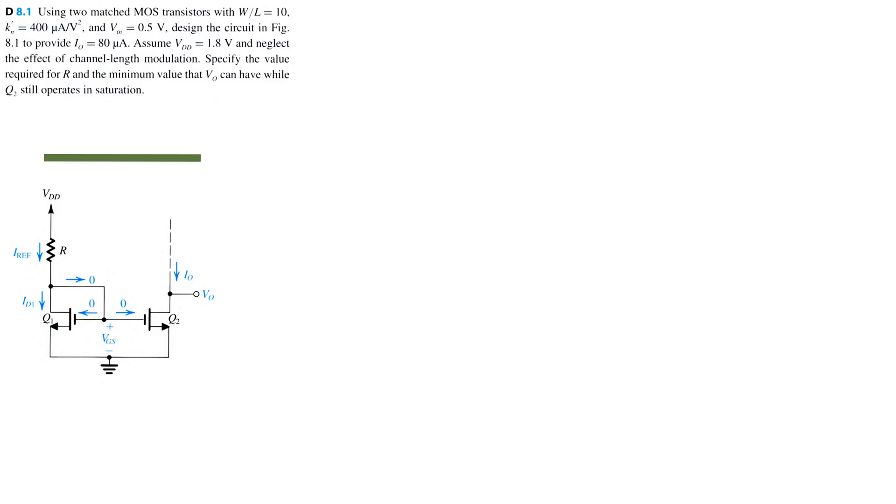We're going to assume that VDD is equal to 1.8 volts. We're going to neglect the effect of channel length modulation. We're going to specify the required value of R and the minimum value that VO can have while Q2 still operates in saturation. So let's begin.